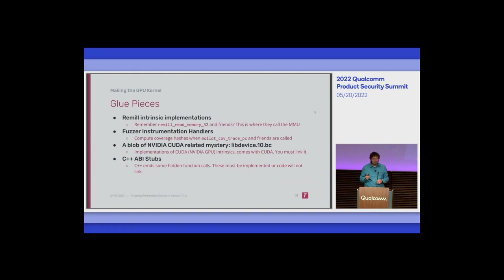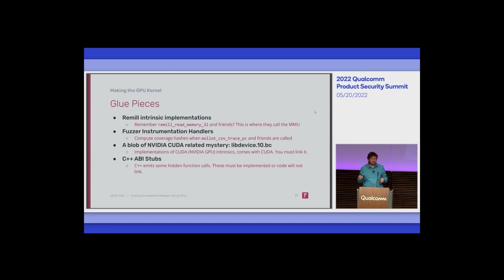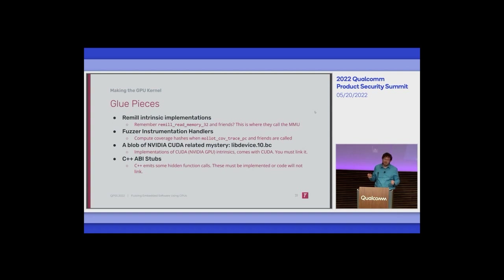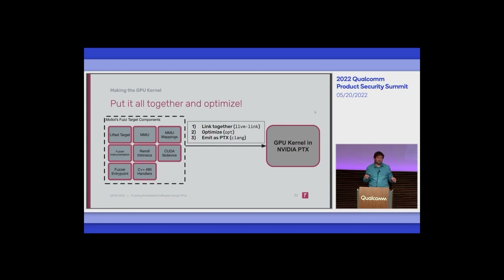You also need a bunch of other glue: you need to link the translation layer into the MMU, provide instrumentation handlers so libFuzzer's callbacks do something useful — in this case keeping a running hash — and there's a mystery blob of stuff that comes with NVIDIA's CUDA library that you just have to link in or nothing will work. Since everything is C++ based, there are extra stubs the compiler emits, and you have to implement some of these mystery API stubs yourself. Then you take all of this and glue it together with llvm-link, which combines separate bitcode modules into one big module.